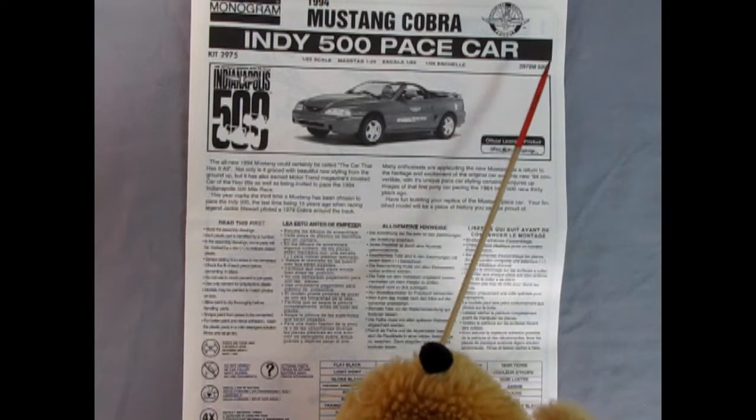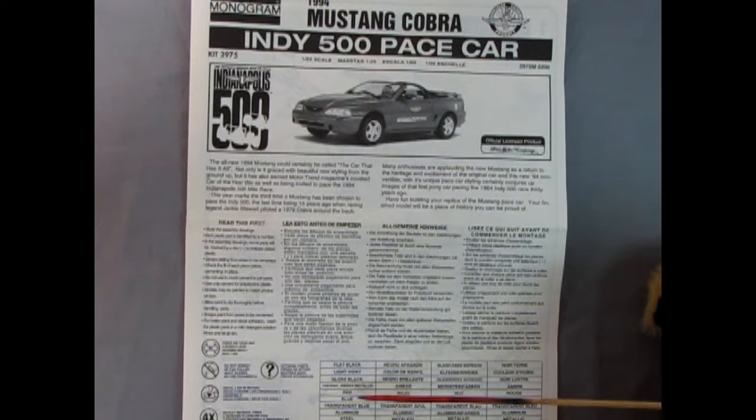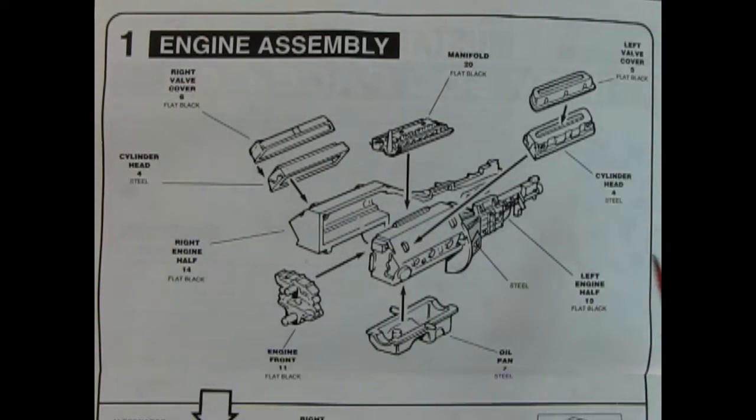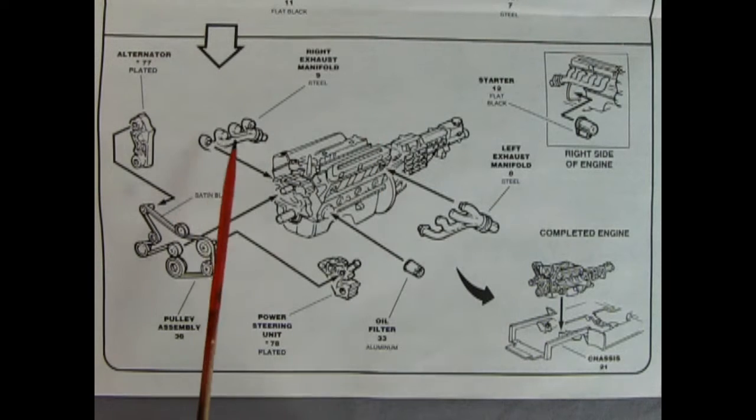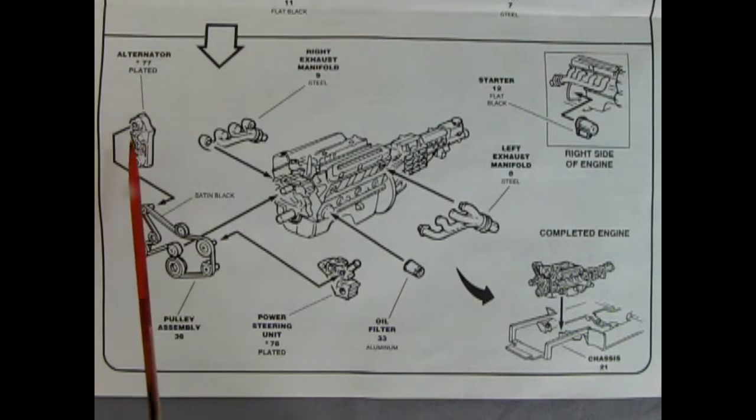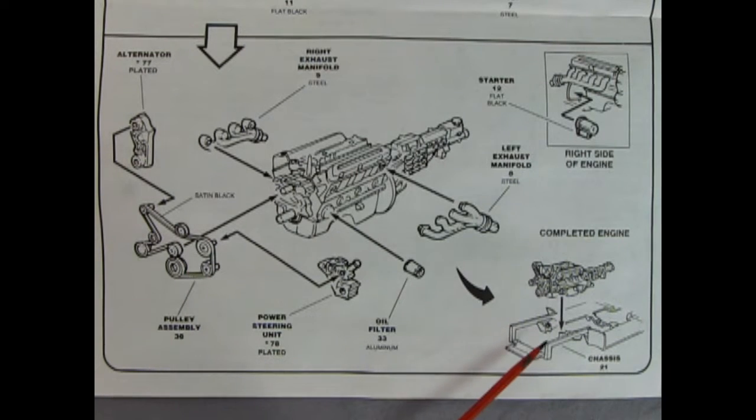And then here we've got our history as well as the read this first. And if you really want to see a good read this first video check this out up here scrolling up top. Shows you everything you need to know. Now down here we've got our color call outs as well as the symbols we'll see in the instruction sheet. Our first panel shows our engine assembly. Here you have your left and right hand side engine block with the wonderful Mustang transmission on there. We've got our cylinder heads and our valve covers. And then our intake manifold, our engine front, and our oil pan. Now moving down into panel two with this arrow we see our right and left hand side exhaust manifolds going on the engine block, our oil filter down here, the power steering unit, the pulley assembly, our alternator up in here, and then our starter on the right side of the engine. Once you complete the block you can drop it into your chassis.